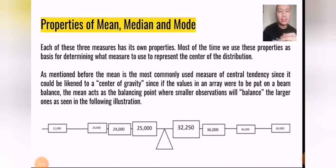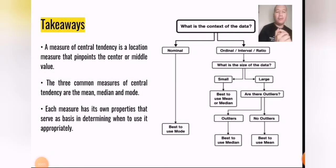These three measures have their own properties. The mean is the most commonly used measure of central tendency since it could be likened to a center of gravity. Like in our picture here, you can compare it as the middle in a balance, because it would balance everything out. If you have variables that have extremes, as low as 12,000 and as high as 60,000, the average acts as the center of gravity. The bigger box here is the mode, 32,250, because it was the most common from all the set of data. At the same time, it's near the center because it's also our median, which was the 18th value in the given.